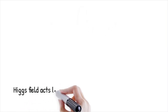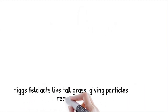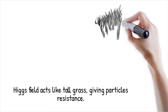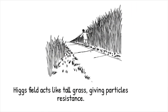Think of trying to run through a field of tall grass. The grass doesn't stop you completely, but it slows you down compared to running on smooth pavement. The Higgs field is like that tall grass — particles move through it and feel a kind of resistance. The more resistance they feel, the more mass they have.